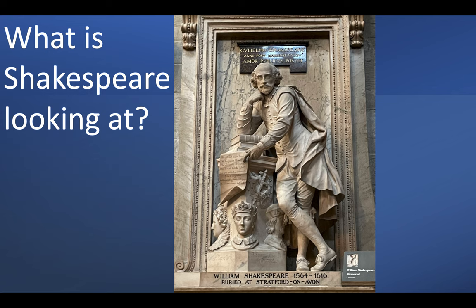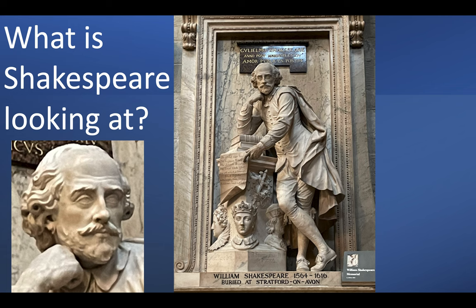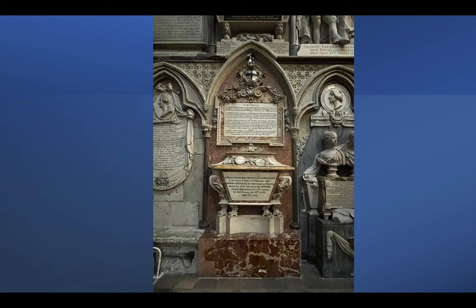What is Shakespeare looking at? As human beings, it's not just what we indicate with our hands and gestures — we also indicate what we mean with our eyes: what we're giving attention to, whether we want something or are trying to avoid something. So what is Shakespeare looking at? Looking through Shakespeare's eyes, you'll see he is looking at a very interesting monument — notably different in shape and color from those around it, in red and white marble.